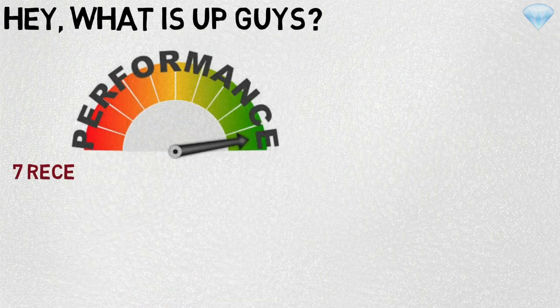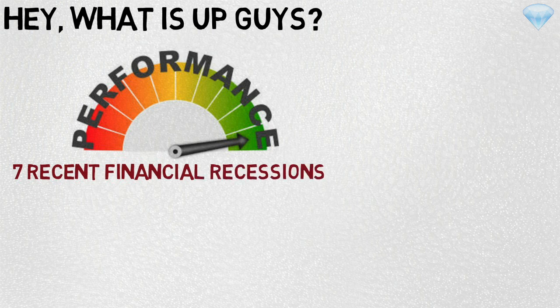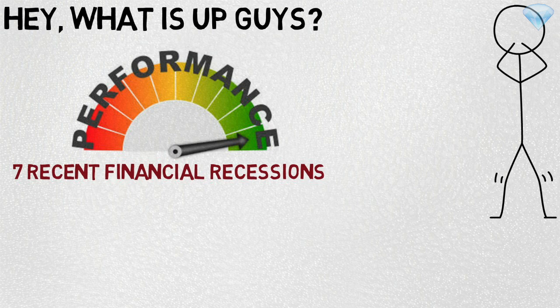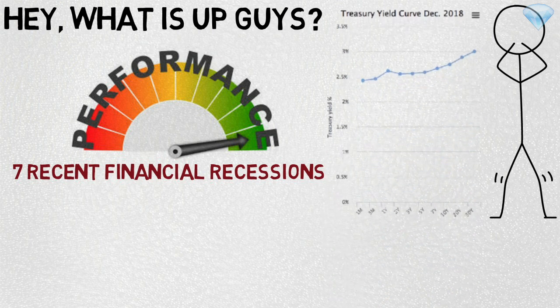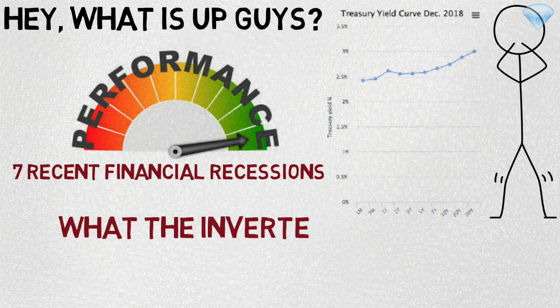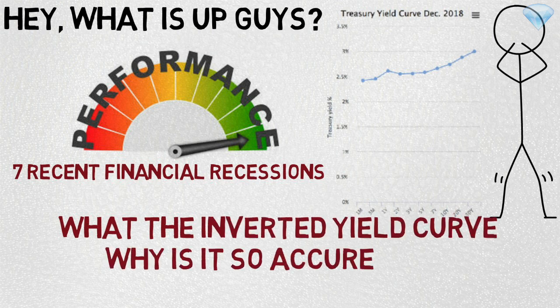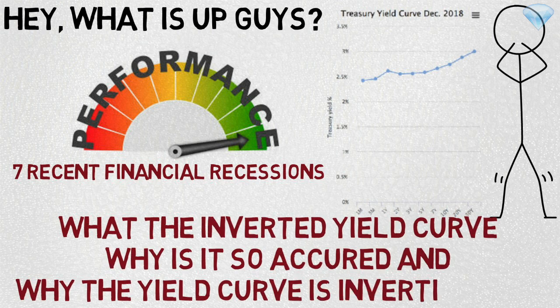Hey, what is up guys? This indicator predicted 7 recent financial recessions. Now it indicates that we are going for another recession very, very soon. I do not have a crystal ball in front of me, but what I do have is an inverted yield curve. In this video, I will explain what is an inverted yield curve, why it's so accurate, and why the yield curve is inverting right now.